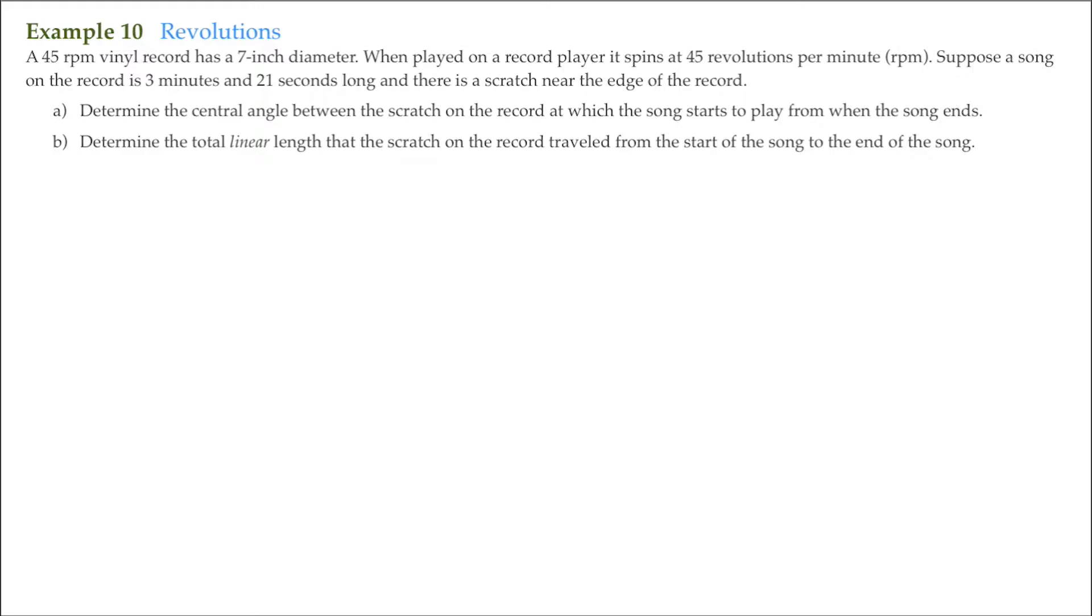It says a 45 RPM vinyl record has a 7-inch diameter. When played on a record player, it spins at 45 revolutions per minute, thus the term RPM. Suppose a song on the record is 3 minutes and 21 seconds long and there is a scratch near the edge of the record.